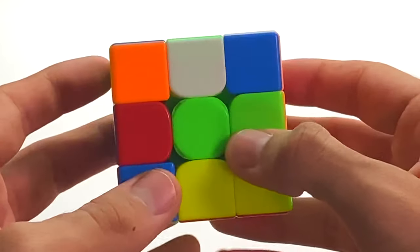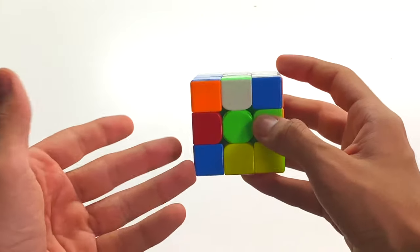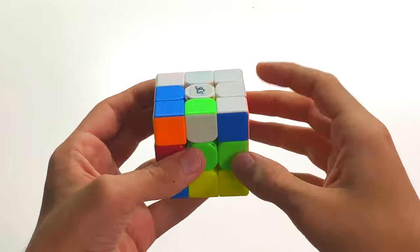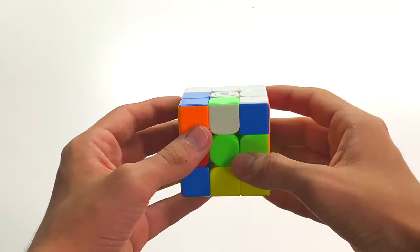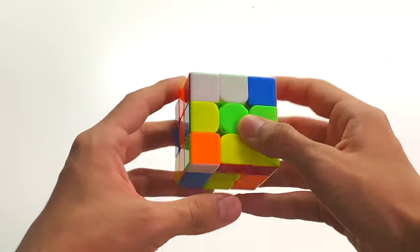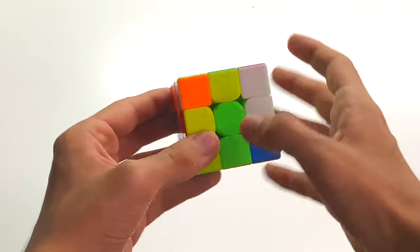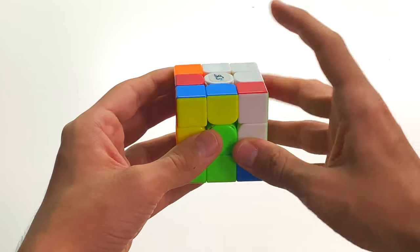So as you guys can see, there's like no obvious solution here per se, and the only thing I can think of is reversing the scramble. So yeah, let me show you guys how I visualize the scramble being reversed. So basically you can hold it from this angle for yellow cross once again.